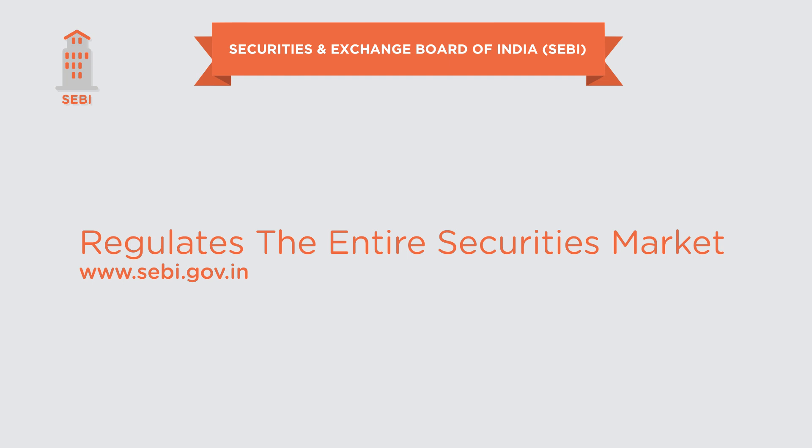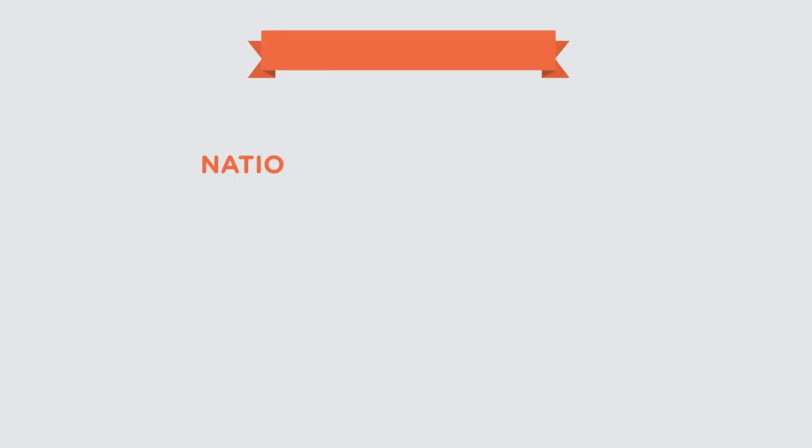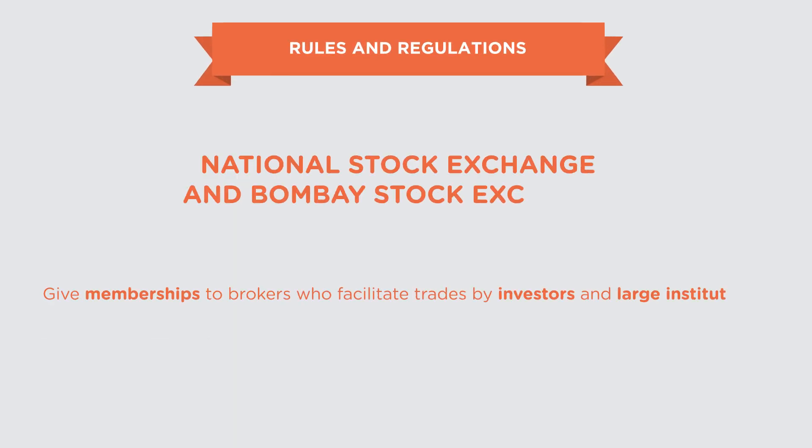Next we have the Reserve Bank of India. The RBI is the financier to the Indian economy — it's the central bank responsible for implementing monetary and credit policies. It can issue currency notes and, through its control of interest rates, can manage money flow into the economy by increasing or decreasing it. This has a huge impact on the stock market, because if there's a lot of inflow of money companies will grow faster. Then we have the National Stock Exchange and the Bombay Stock Exchange, which are also required to follow regulations.